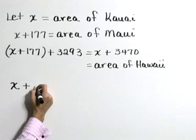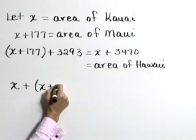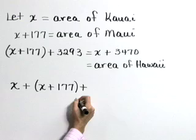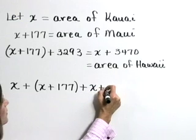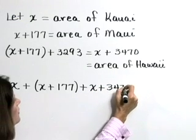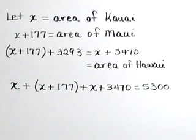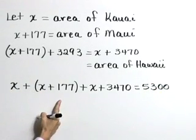plus the area of Maui, X plus 177, plus the area of Hawaii, which is X plus 3,470, is equal to 5,300 square miles. Now let's solve this equation.